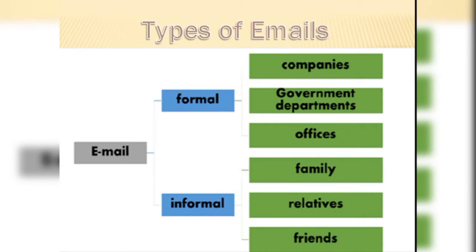Emails can be divided into two categories: formal mails and informal mails. The formal category includes emails sent as business mails from or to companies, government departments, offices, educational institutions, etc. When talking about informal emails, they are usually mails sent to family, relatives, friends, etc.